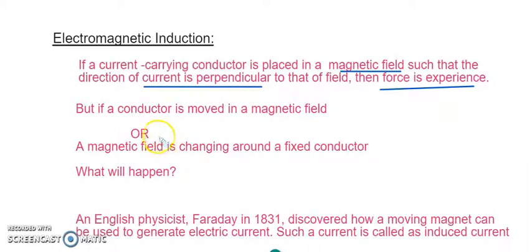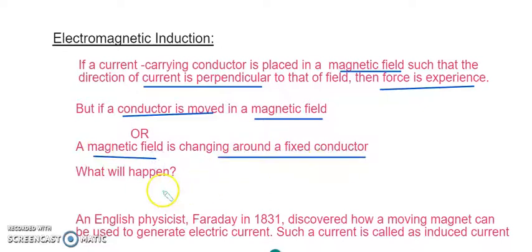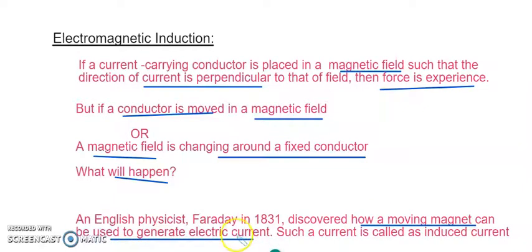Now if we do something a little different — if a current conductor is moved in a magnetic field, or if the magnetic field is changing around the conductor, what will happen? An English physician called Faraday in 1831 discovered how a moving magnet can be used to generate electric current. The current produced in such a manner was called induced current, because here the electrons are not flowing due to a battery but because of the movement of the magnetic effect.